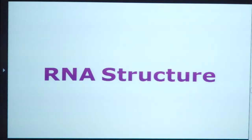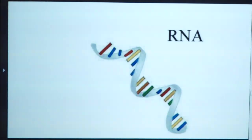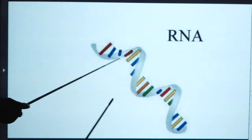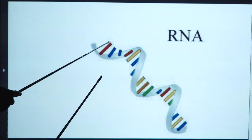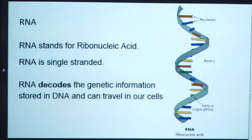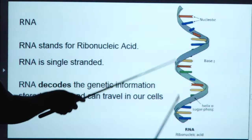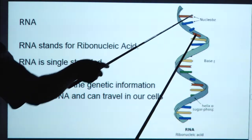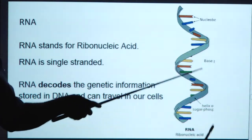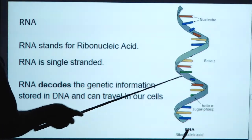RNA structure — ribonucleic acid structure. In the case of RNA, we have only a single strand; there is no helix formation like in the DNA molecule. RNA is single-stranded in nature. RNA records the genetic information stored in DNA and can travel within our cells. The structure includes nucleotides, bases, and a helix of sugar-phosphate.